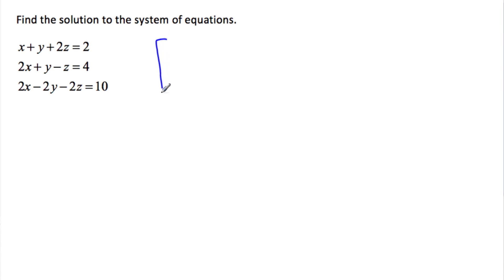So what we're going to first do is we're going to put this into augmented form. We're going to leave out all the variables and just grab the coefficients. So it's 1, 1, 2 and then a 2. Then 2, 1, minus 1 and 4. And 2, minus 2, minus 2, 10.